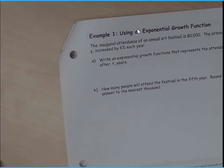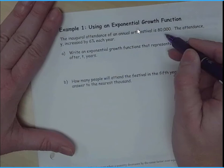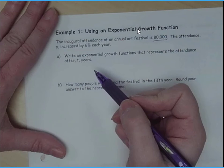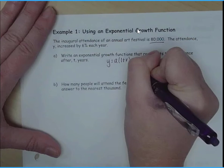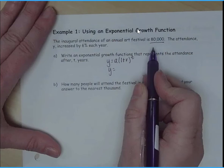So what does this mean? If we have an initial amount at a festival of 80,000 people and it increases by 6% each year, what is our anticipated growth rate? So if we look back at our equation, y equals a times the quantity 1 plus r to the t. So I've got my initial amount is 80,000.